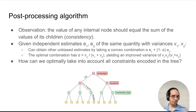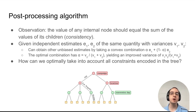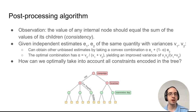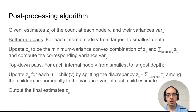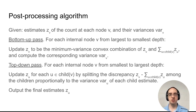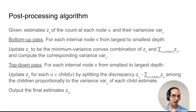But all of the estimates in this tree have a more complicated set of relationships, so we want to optimally take into account all of the constraints encoded in the tree. We start out with independent estimates of the count of each node in the tree and the corresponding variances.